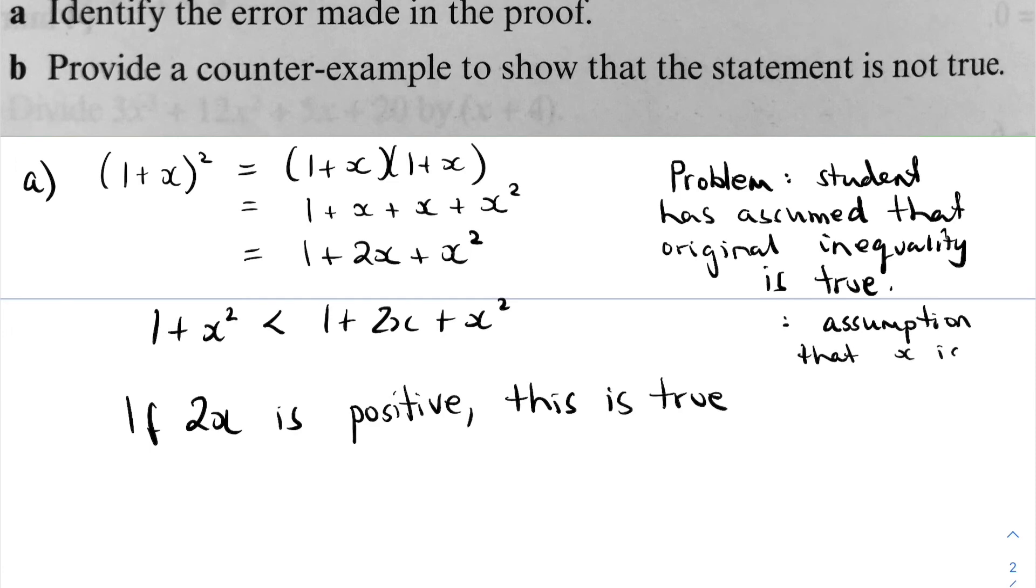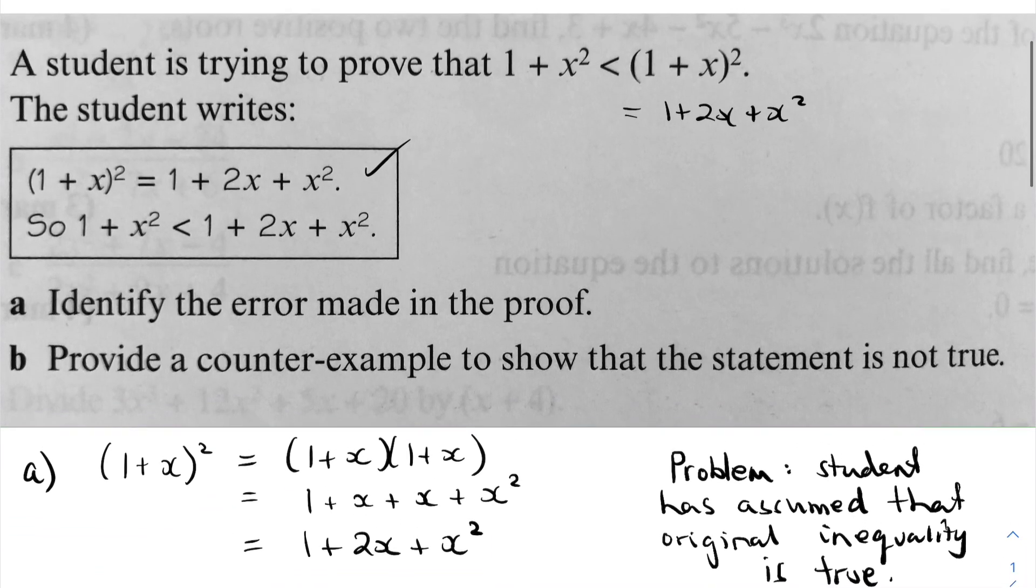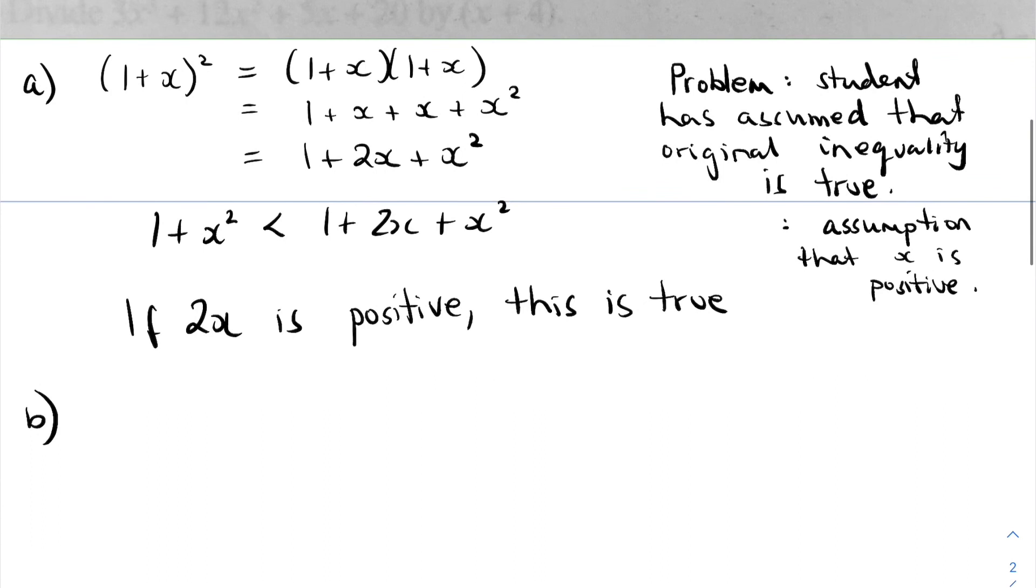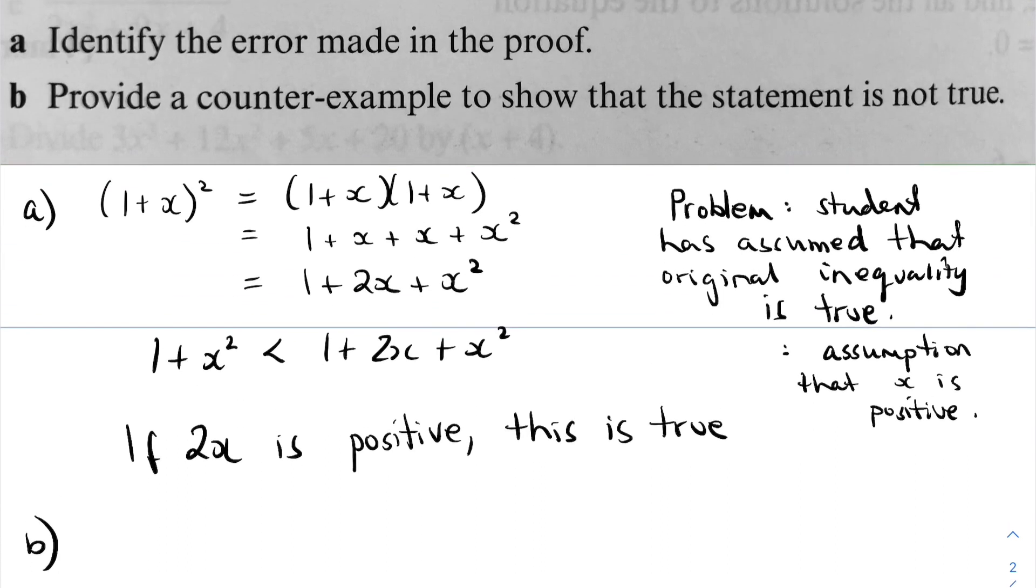But it's arguable that the problem in that first part of the question there is the assumption that the original inequality was true. In part b, provide a counterexample to show that the statement is not true. All we have to do is choose any x that isn't positive.